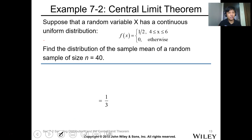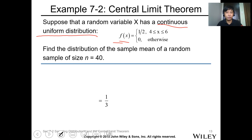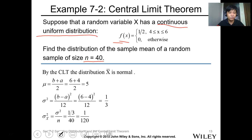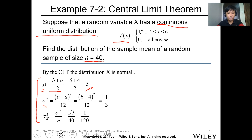Next, the central limit theorem for the continuous uniform distribution. We have the distribution function f(x) equals 1/2, where x is from 4 to 6 inclusive, and 0 otherwise. Find the distribution of the sample mean for a random sample n equals 40. We need to find the parameters. The mean for a continuous uniform random variable is b plus a over 2, so we have 5. The variance of the uniform distribution is (b minus a) squared over 12, so it is 1/3. The sample variance is sigma squared over n, so 1/3 over 40, which is 1/120.